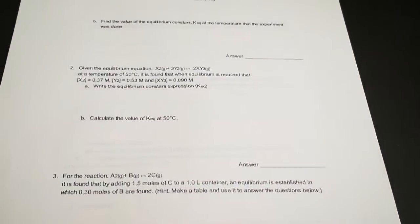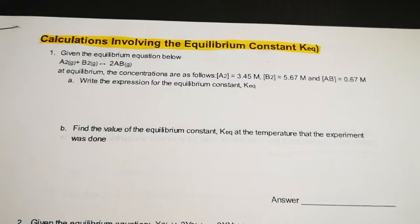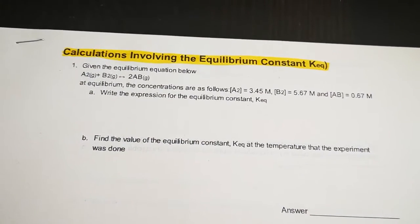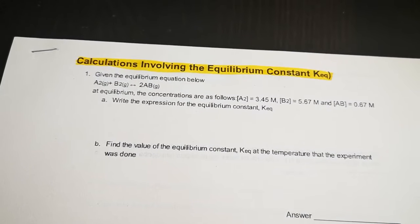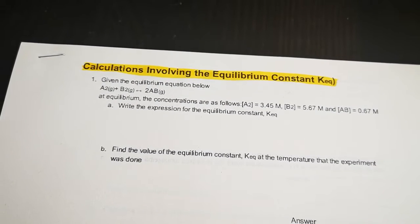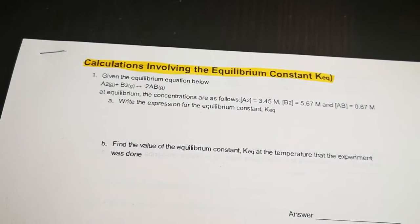So for question number 1a, our first step is to write the expression. In this case, it's always the concentration of the products divided by the concentration of each reactant, raised to the power of the coefficient in the balanced equation.